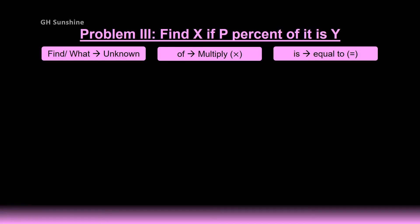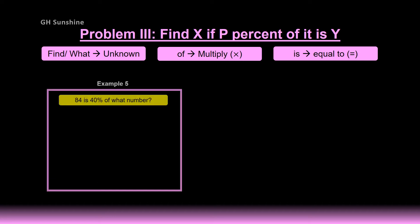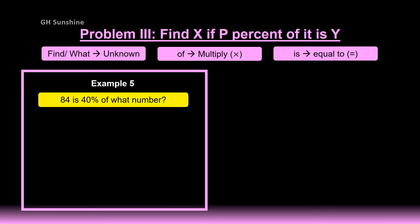Third problem of percentage: find X if P percent of it is Y. Remember the three guidelines — 'find' means unknown, 'of' means multiply, and 'is' means equal to. Example 5 — 84 is 40% of what number? 'What number' means the unknown X. So 40 over 100 times X equals 84. You can use 0.4 in decimal form. Solving gives X equals 210.